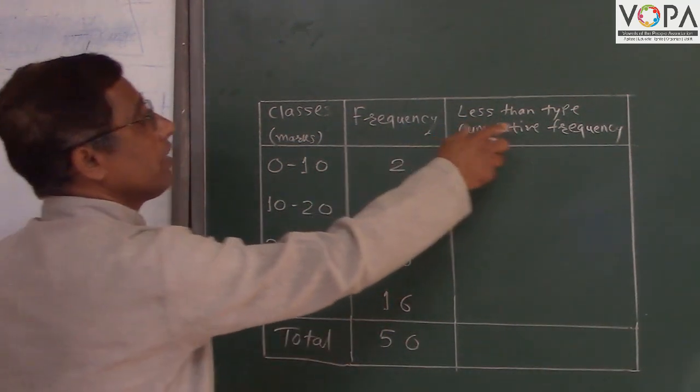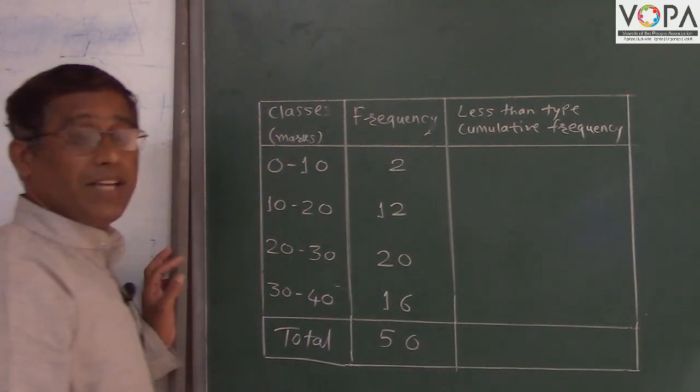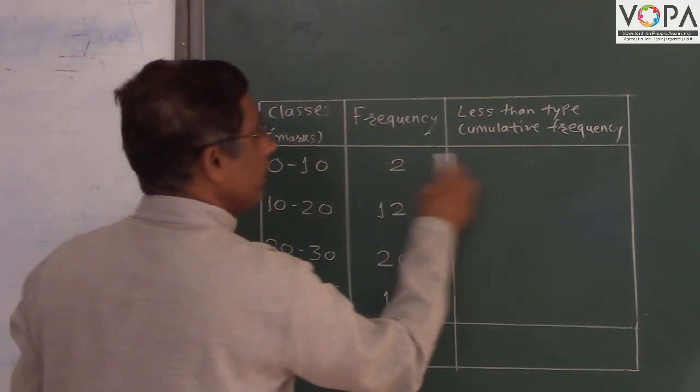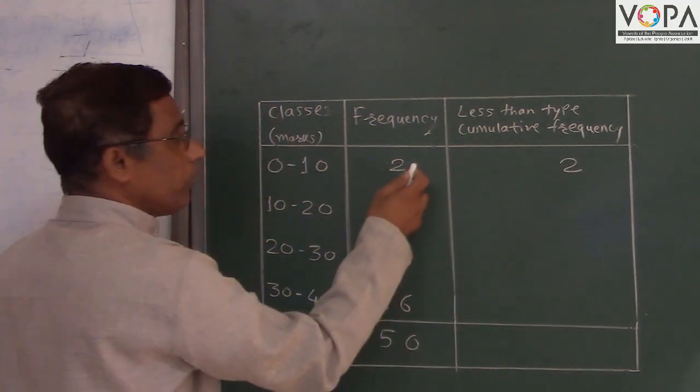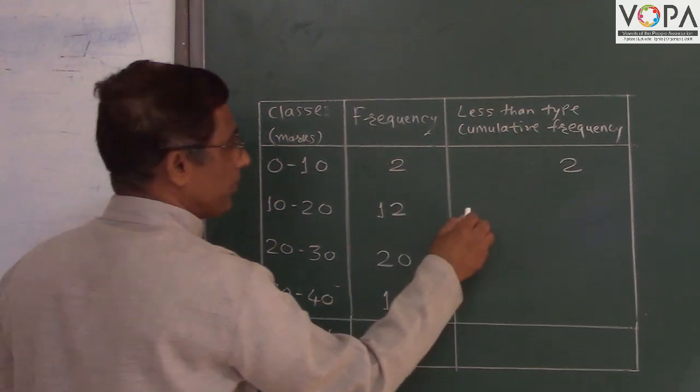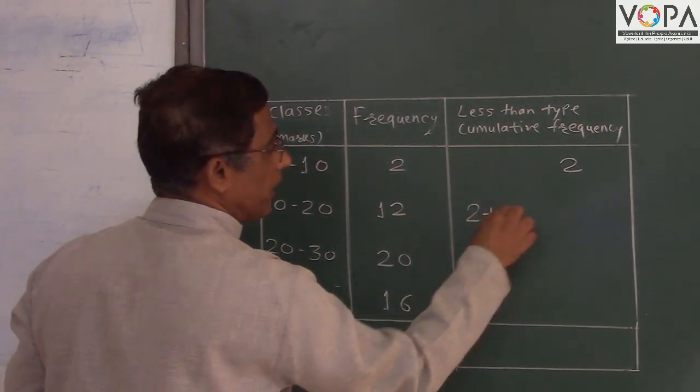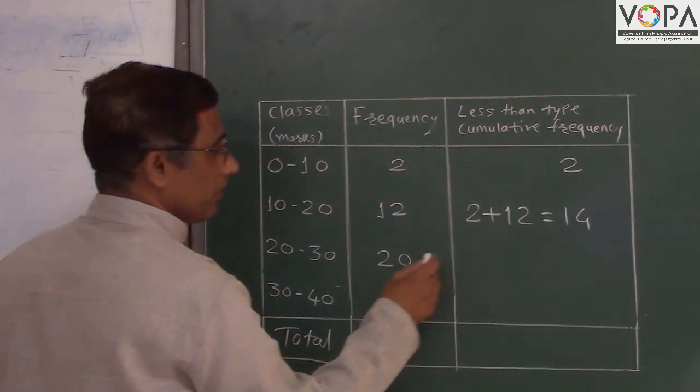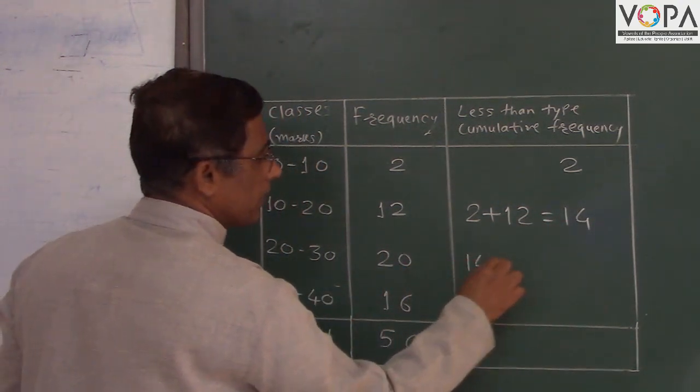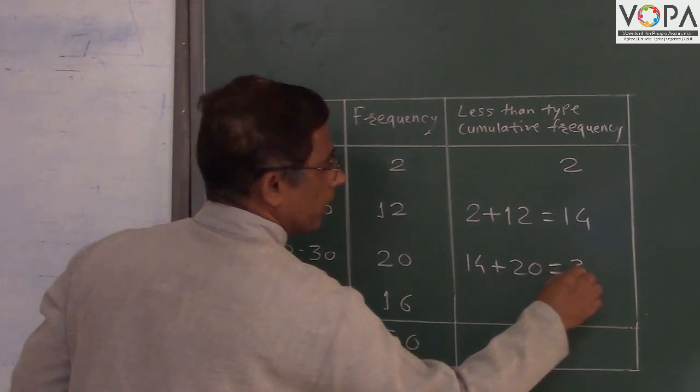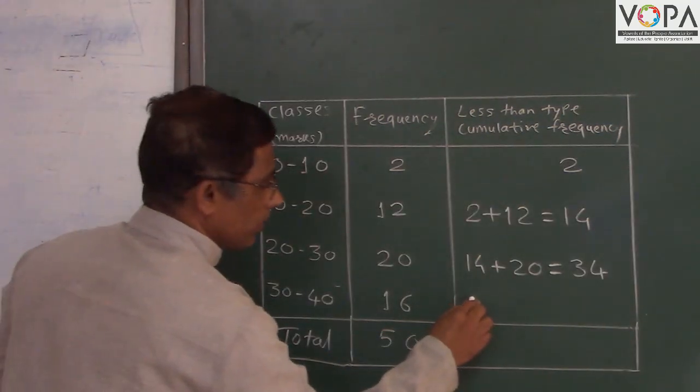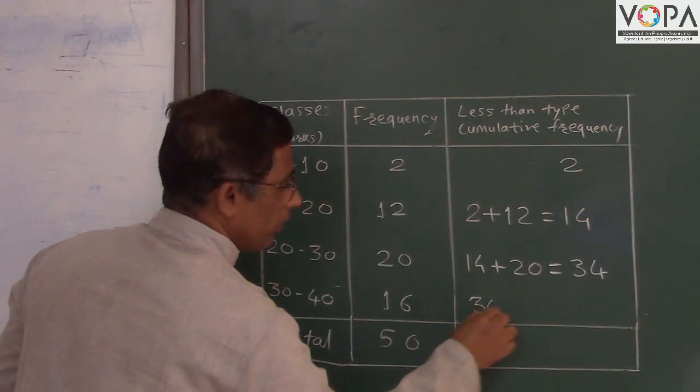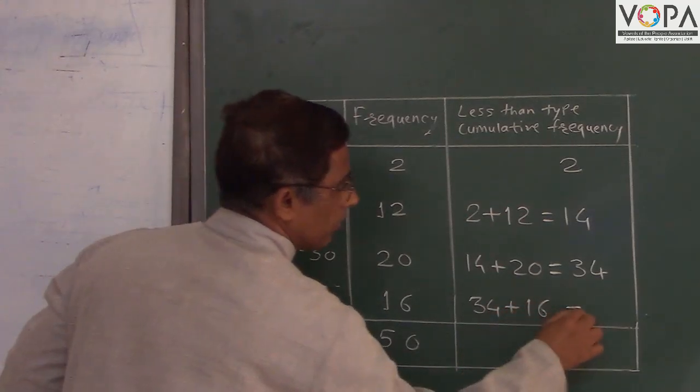Now we take last column less than type cumulative frequency. Here 2. Now add previous class frequencies means 2 plus 12 is equal to 14. Again 14 plus 20 is equal to 34. Now 34 plus 16 is equal to 50.